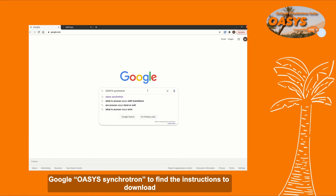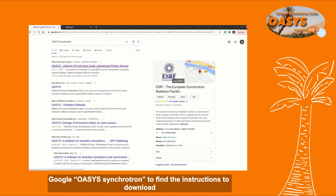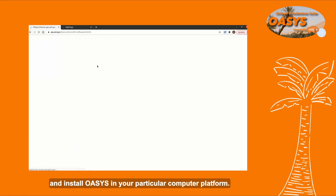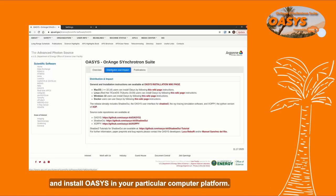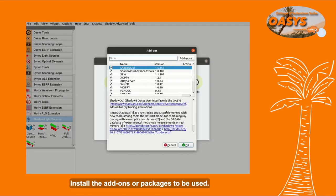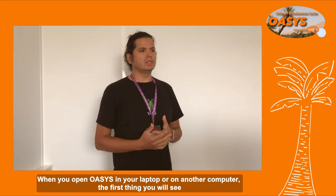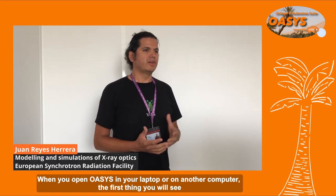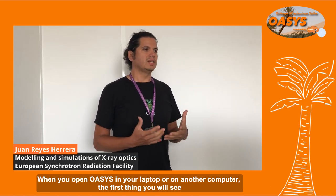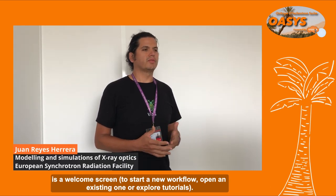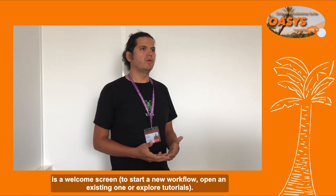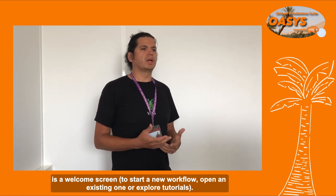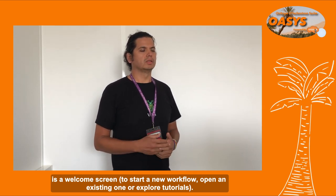Search for OASYS on the web to find instructions to download and install OASYS on your particular computer platform. Install the add-ons or packages to be used. When you open OASYS on your laptop or another computer, the first thing you will see is a welcome screen, where you can start a new workflow, open an existing one, or explore tutorials.